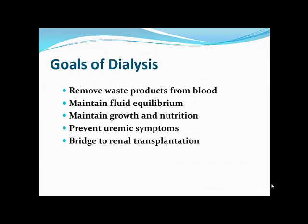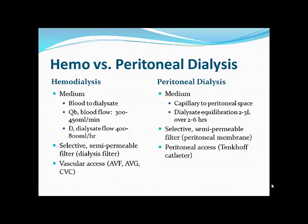The goals of dialysis include: removal of waste products from blood, maintaining fluid equilibrium, maintaining good growth and nutrition to prevent uremic symptoms, and serving as a bridge to renal transplantation. Even though hemodialysis and peritoneal dialysis are mechanically quite different, they share common basic requirements: a medium by which to exchange waste products — in HD it's blood to dialysate; in PD, peritoneal capillaries exchanging into dialysate fluid.